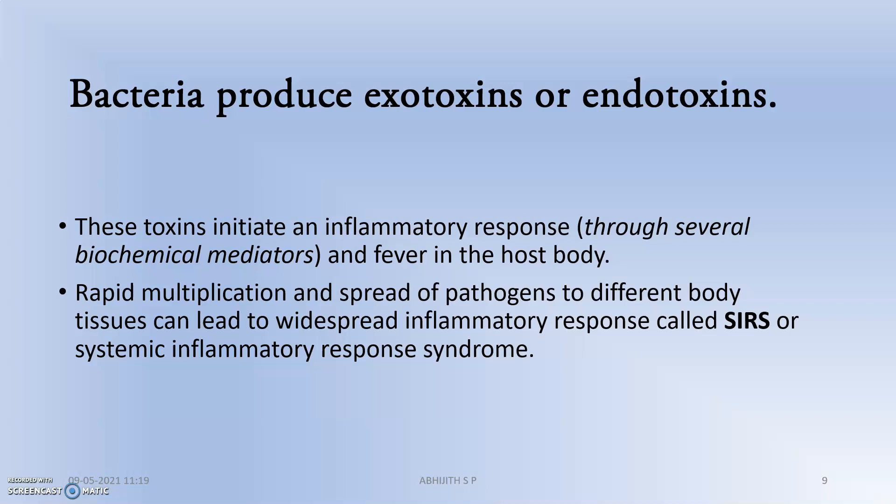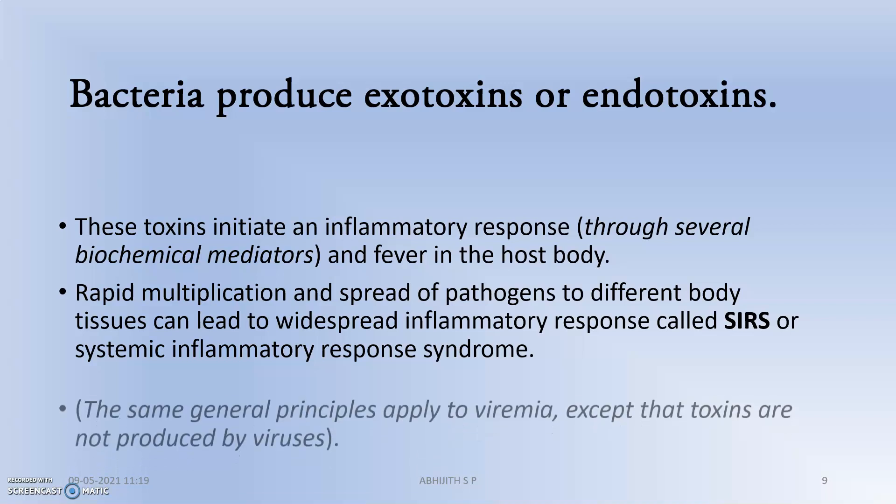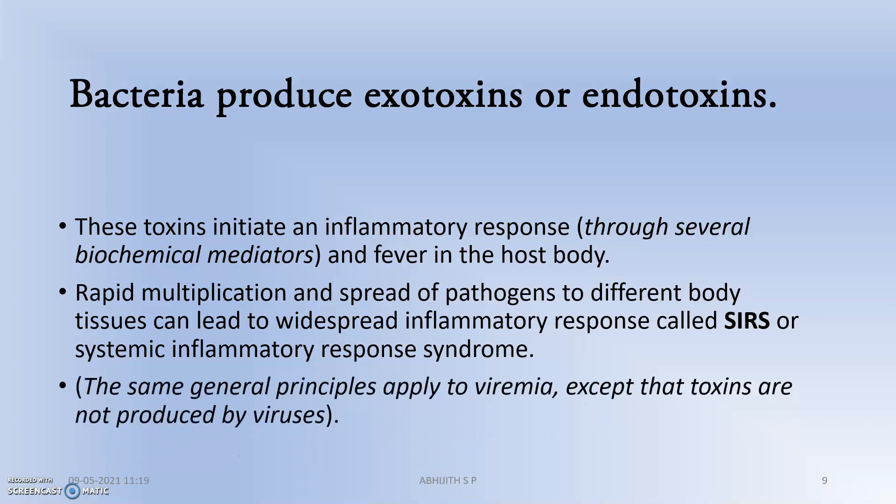Whenever bacteria multiply at a higher rate, they are transported to each and every part of the system via the blood, producing widespread inflammatory reactions throughout the body — referred to as systemic inflammatory response syndrome. The same general principle applies to viremia, except that toxins are not produced by the virus; the virus itself is the main causative agent in SIRS.